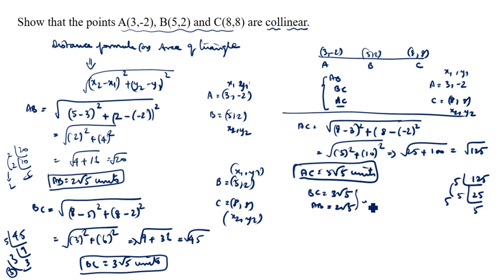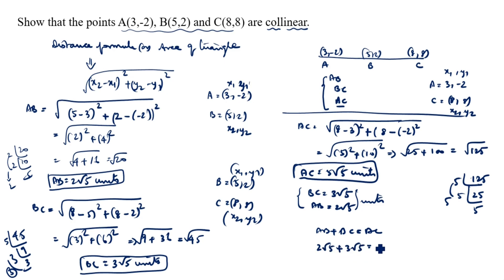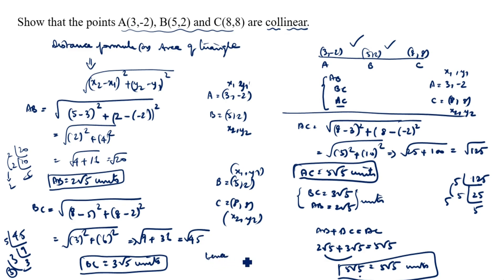Now, AB + BC = 2√5 + 3√5 = 5√5 = AC. Since AB + BC = AC, the points A, B, and C are collinear. Hence proved. Thanks for watching this video.